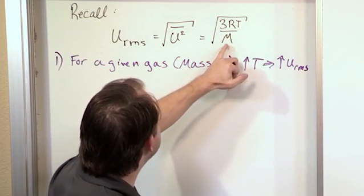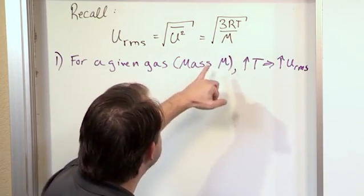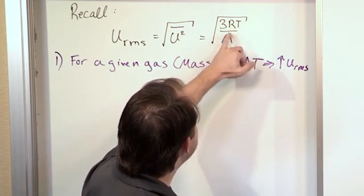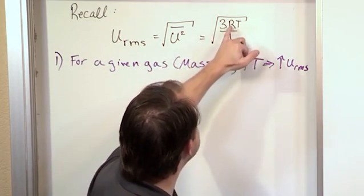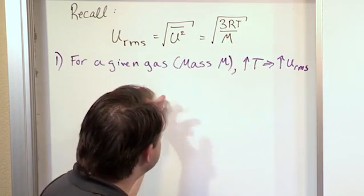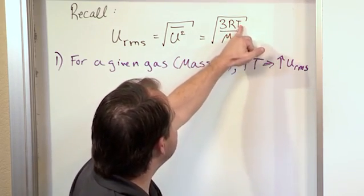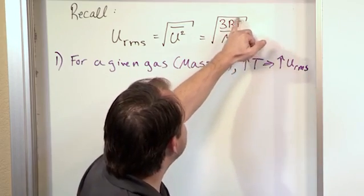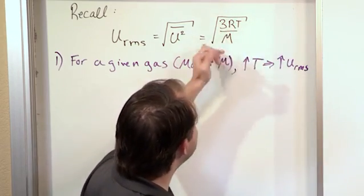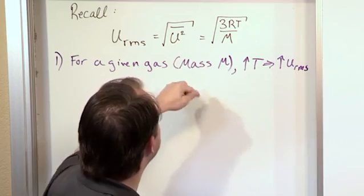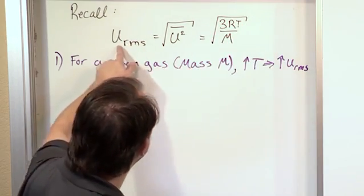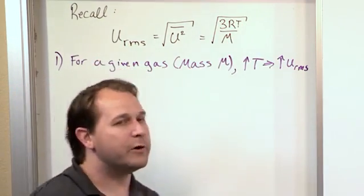If we have a given gas or two different gases at the same mass, so we hold everything constant, the 3 is a constant, the R is a constant, and we hold M constant. If we increase the temperature, then you can see how it's on the numerator, it's gonna drive everything in here up, even though we're taking a square root, everything is still going up. So an increase in temperature leads to an increase in the RMS speed.